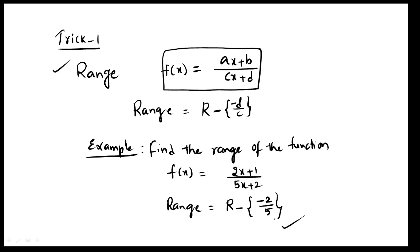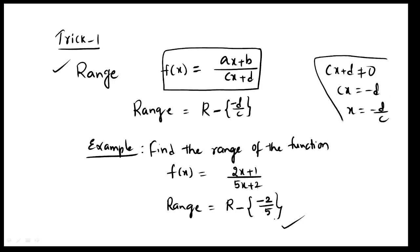So d/c = 2/5, meaning range = ℝ minus {-2/5}. This means the value that makes the denominator equal to zero — when cx + d = 0, x = -d/c — is excluded from the range. So range = ℝ minus {-d/c}. Thank you very much.